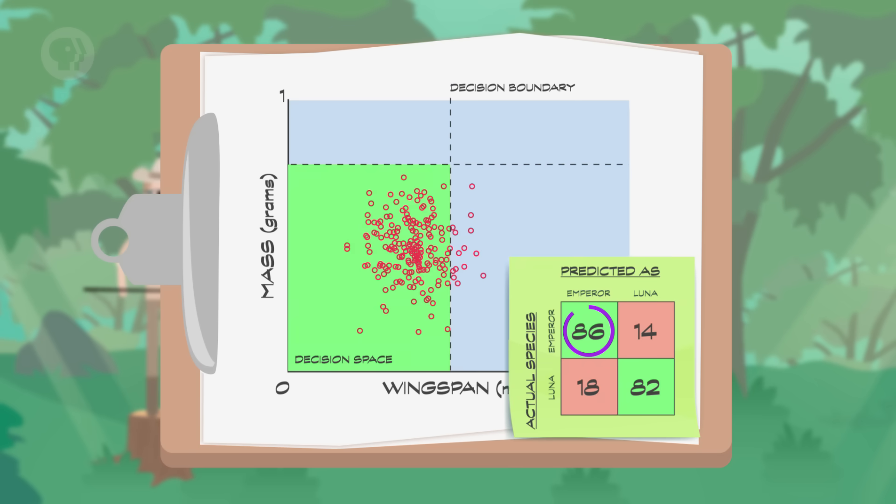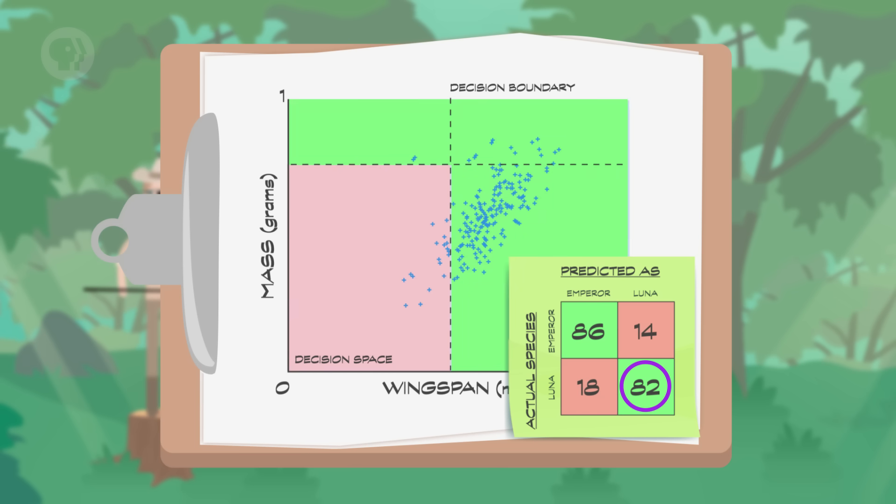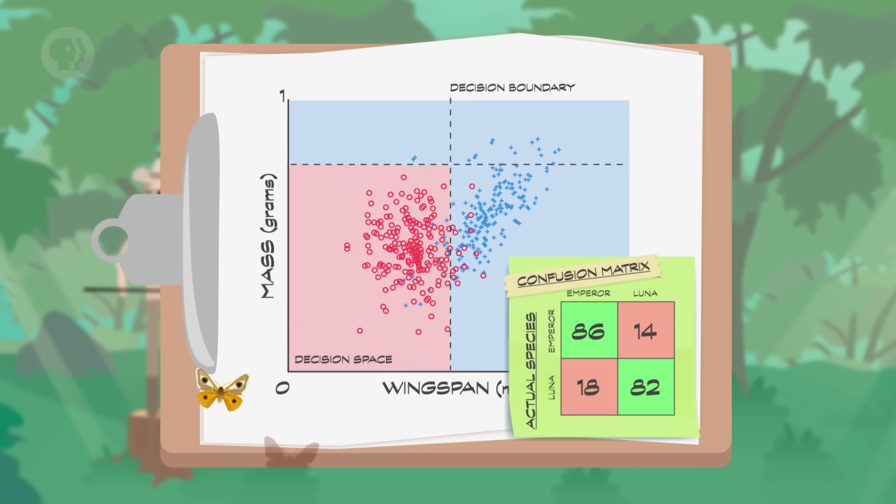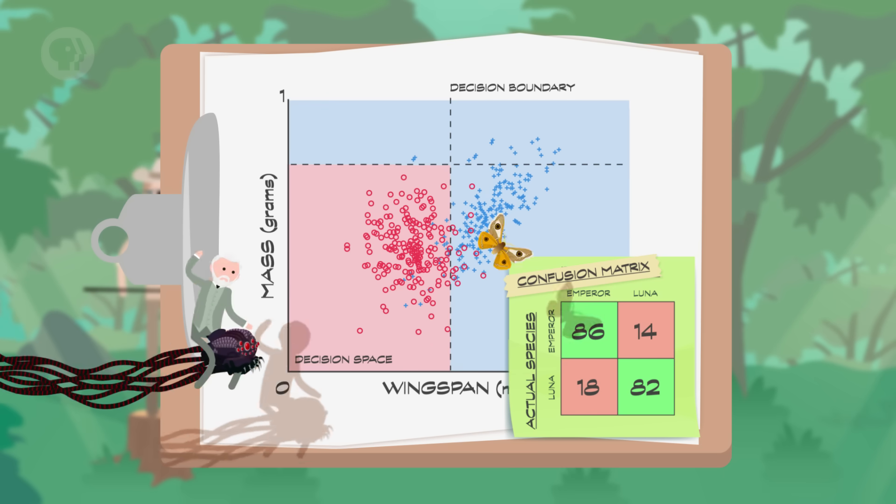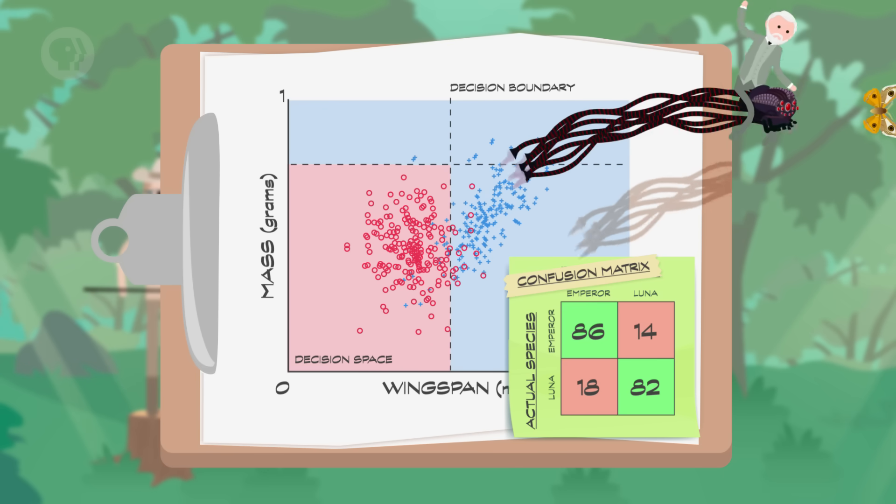If we look closely at our data, we can see that 86 emperor moths would correctly end up inside the emperor decision region, but 14 would end up incorrectly in lunar moth territory. On the other hand, 82 lunar moths would be correct, with 18 falling onto the wrong side. A table like this showing where a classifier gets things right or wrong is called a confusion matrix, which probably should have also been the title of the last two movies in the Matrix trilogy.